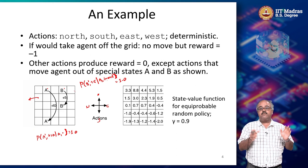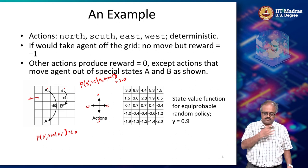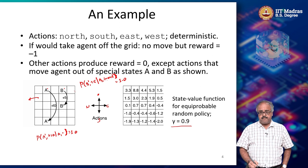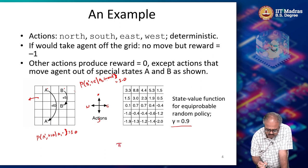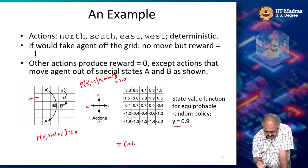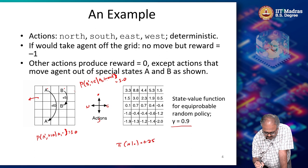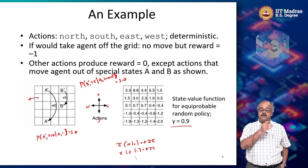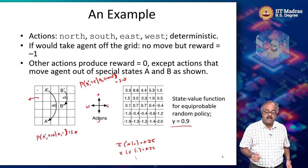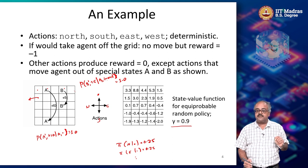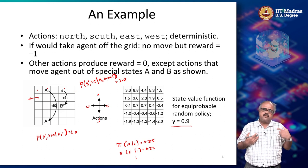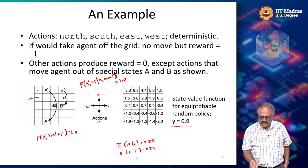Whenever you reach B, you get thrown to B' with a reward of plus 5. Whenever you reach A, you get thrown to A' with a reward of plus 10. Otherwise you get no reward. Now, let us use an equiprobable random policy: pi(north | any state) = 0.25, pi(east | any state) = 0.25, and so on for all four actions — probability 0.25 whichever state you are in. Even if you are in a corner and will get minus 1 for trying to go north or west, the policy still assigns probability 0.25 to those actions. We also set gamma equal to 0.9.